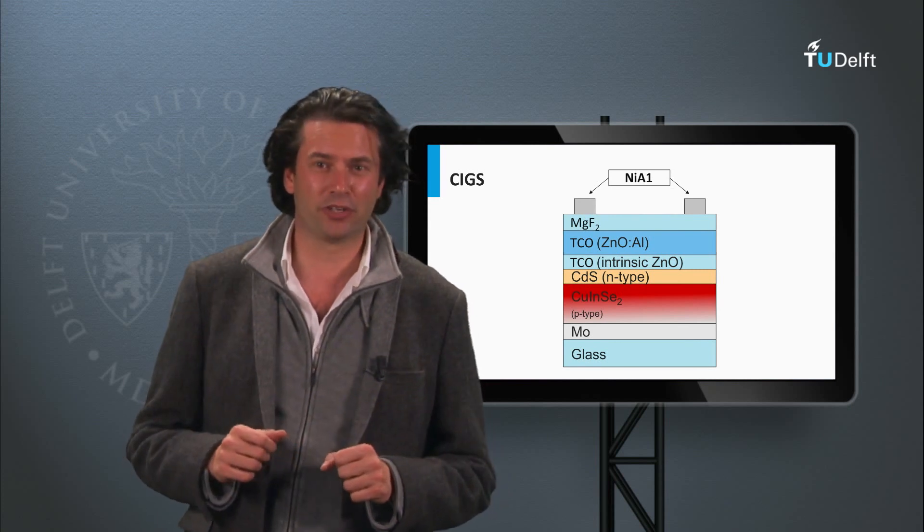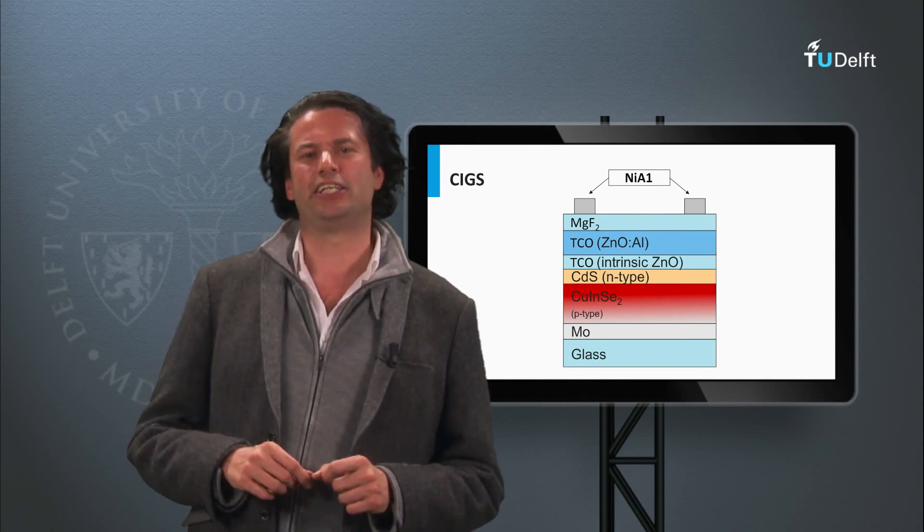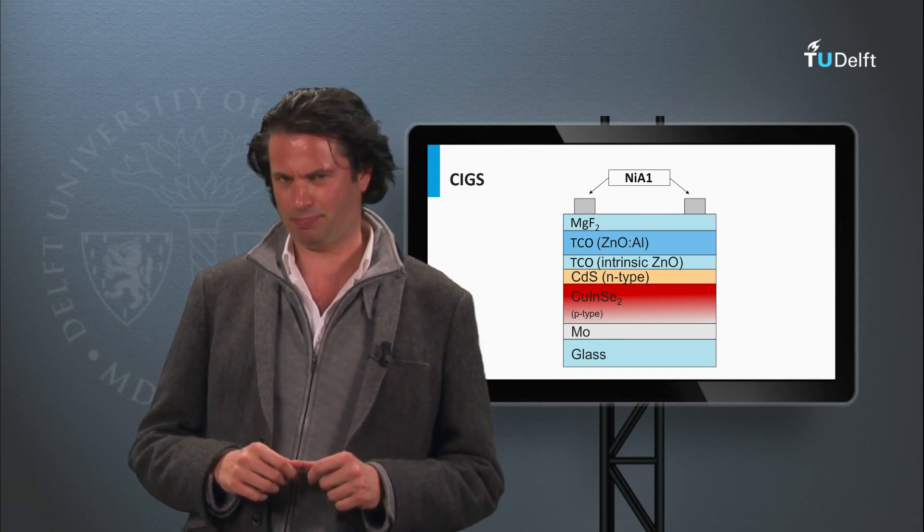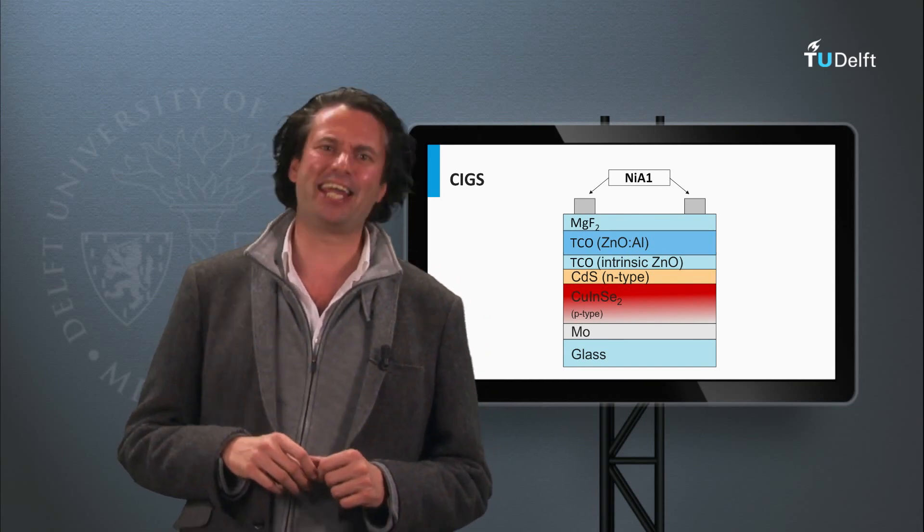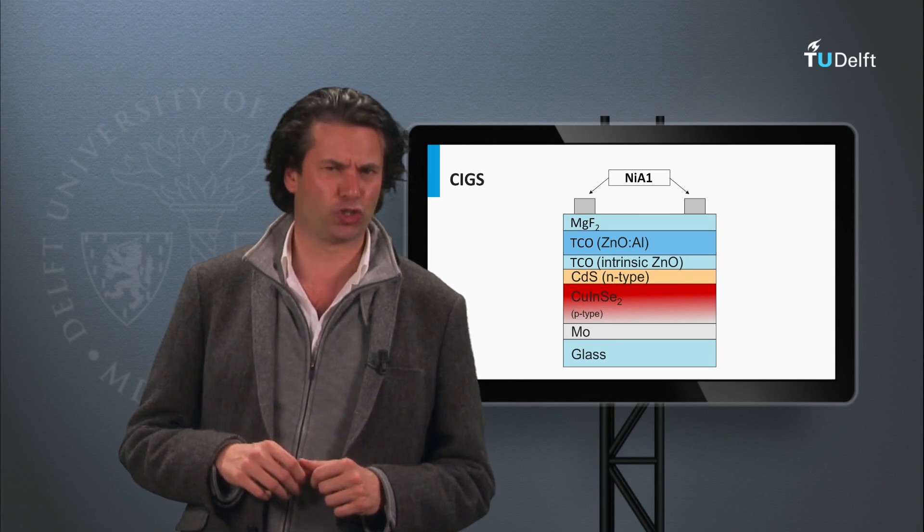The next thin film PV technology we will discuss today is based on CIGS. CIGS stands for copper, indium, gallium, selenide, sulfide.